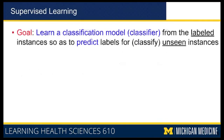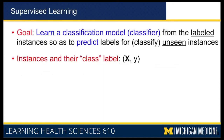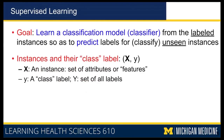So, supervised learning — the goal is to learn a classification model, called a classifier, from labeled instances, from past instances for which you know what the decision was, so as to predict labels for unseen instances. The instances are usually called X, and we use bold X to indicate it is a vector of multiple features. Y is the set of possible class labels, and small y is the class label assigned to an instance.